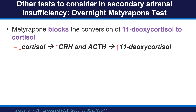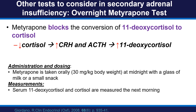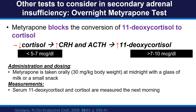The overnight metyrapone test is based on the fact that metyrapone blocks the conversion of 11-deoxycortisol to cortisol — the last step in cortisol production in the adrenal gland. After a patient takes metyrapone at midnight, cortisol the next morning should be very low, which raises CRH and ACTH, stimulating adrenal production of 11-deoxycortisol. Metyrapone is taken orally at midnight with a glass of milk or small snack, and 11-deoxycortisol and cortisol are measured the next morning. To exclude adrenal insufficiency, 11-deoxycortisol must be above 7 to 10 micrograms per deciliter; if below this cutoff, adrenal insufficiency is diagnosed.